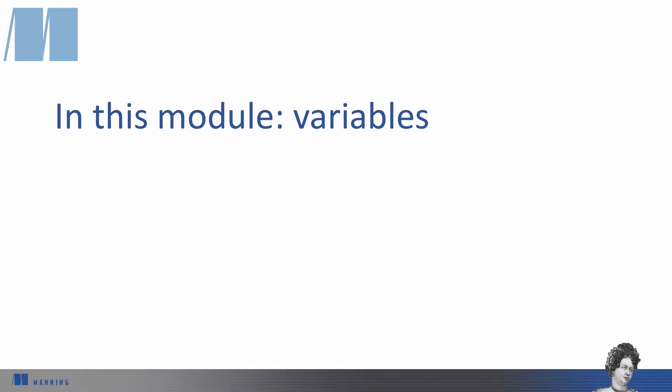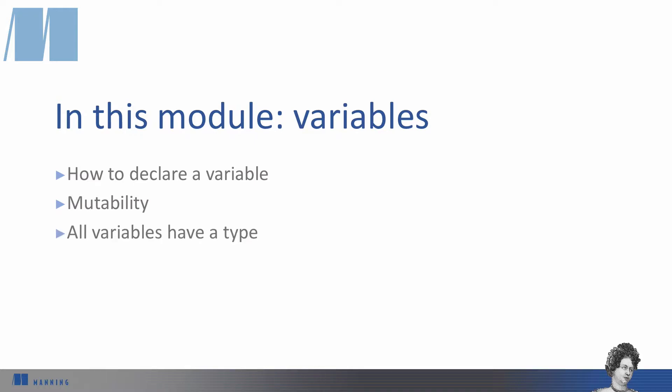In this module, we're going to be talking about variables, and especially what makes variables different in Rust as opposed to other programming languages. First, we'll cover the syntax to declare a variable in Rust. Then we'll talk about mutability, which is whether a variable is allowed to change its value or not. Finally, we'll discuss how every variable in Rust has a type, whether we explicitly annotate that type or not.